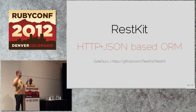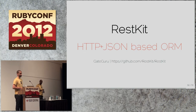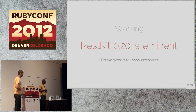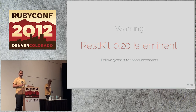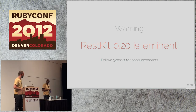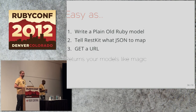Now the big one: RestKit. It's built on top of AFNetworking as of the new version, and it's essentially an HTTP/JSON ORM. Written by the guys at Gate Guru, it's a wildly popular library. RestKit 0.20 is dropping in about two months and — as you'd expect from what sounds like a minor version — it changes everything. This presentation focuses on the new 0.20 API.